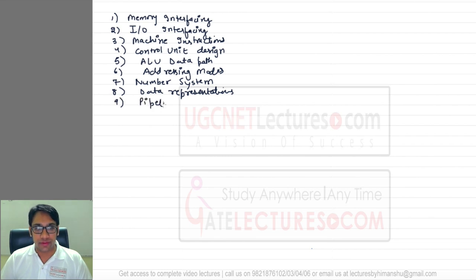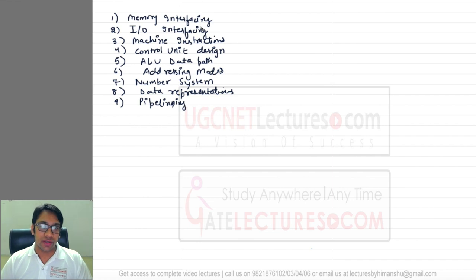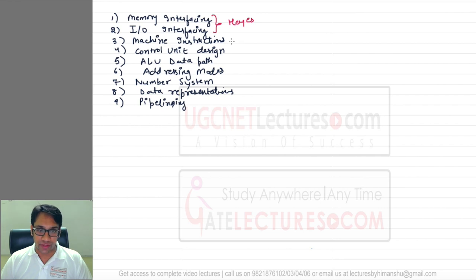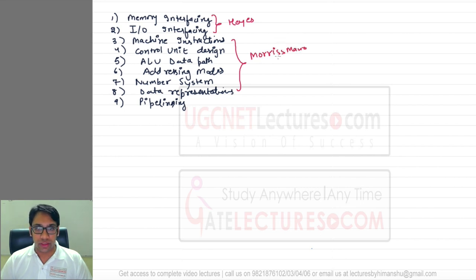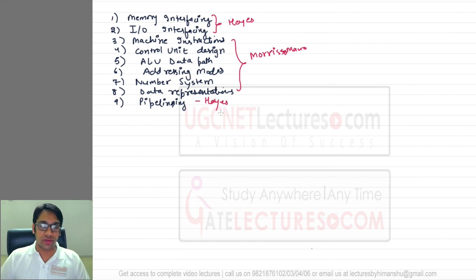Then we'll be discussing data representations, and the last topic is pipelining, which is one of the most important topics in computer architecture. For memory interfacing and I/O interfacing, you can refer to the book by Hayes. For machine instructions, control unit design, ALU data path, addressing modes, number system, and data representation, you are going to refer to the book by Morris Mano. For pipelining, again you can refer to Hayes.